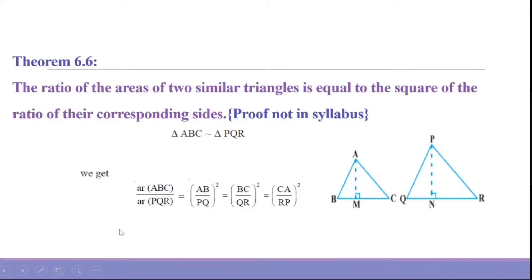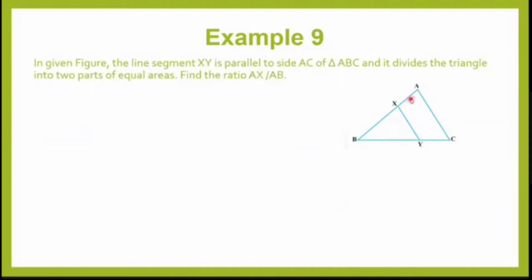Now let us do some examples and questions related to this theorem. We are taking up example 9. In the given figure, line XY is parallel to line AC and it divides the triangle into two parts of equal areas. That means area of triangle BXY will be equal to area of trapezium AXYC. I need to find out the ratio AX upon AB. For that, first I need to prove the triangles similar.